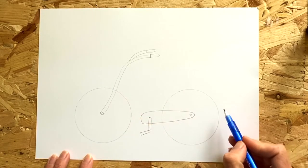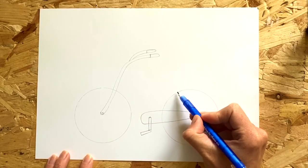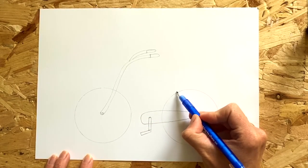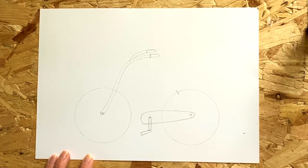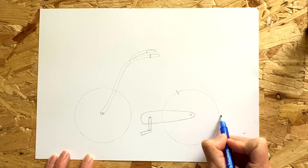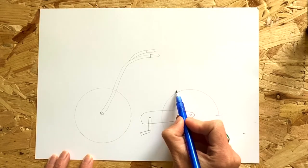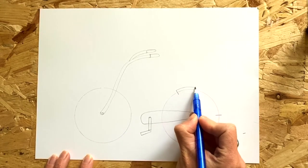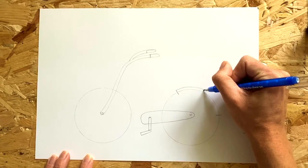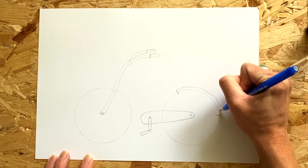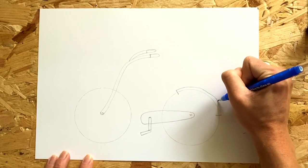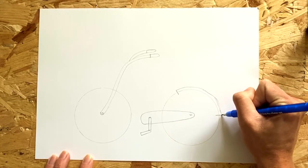Now we're going to add the mudguards to the backs of both wheels. First of all, draw a line going through the line of your circle one at 11 o'clock and one at 3 o'clock. Ask an adult to help you with this if you don't know clocks and then just simply join those lines together.